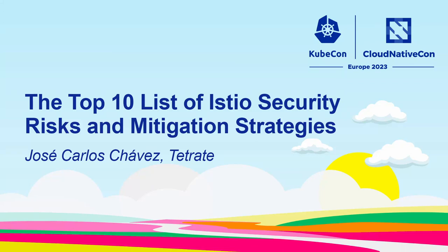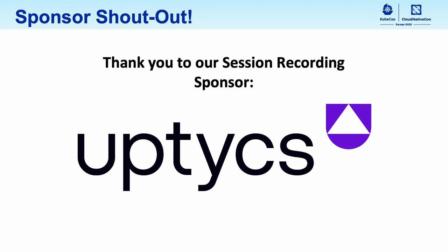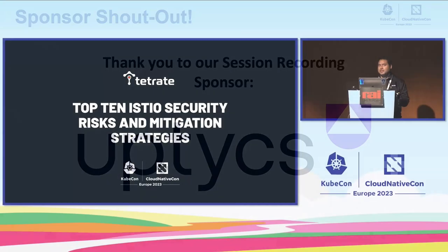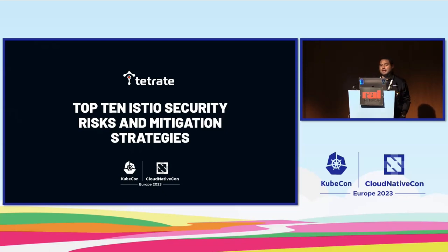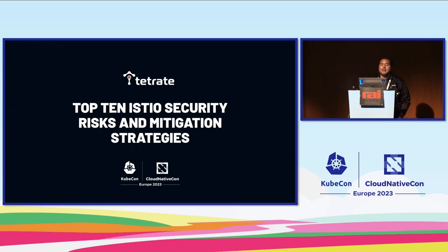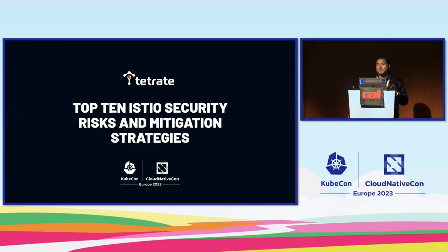I'm so happy to be here at KubeCon. It's a talk after almost three years of not giving any talk or participating in any conference, so it's like a new start for me. Today I'm going to present the top 10 security risks and mitigation strategies. You might have heard of OWASP for the web, and this is an idea that came up because I found this need in the cloud-native space to have something specific to cloud-native, because cloud-native architectures have specific problems with specific environments.